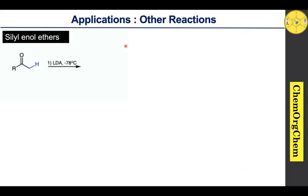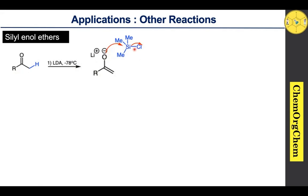LDA is highly useful for generation of silyl enol ethers. An enolizable ketone treated with LDA readily generates the corresponding enolate ion, which then reacts with trimethylsilyl chloride. The O-negative charge attacks the silicon atom, followed by kick-off of the chlorine anion, generating the corresponding silyl enol ether. This silyl enol ether, just like an enolate, can act as a nucleophile.